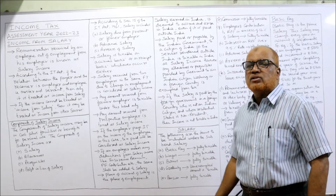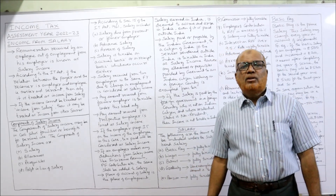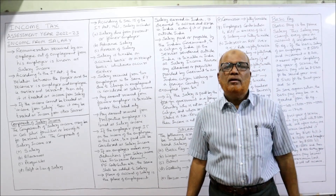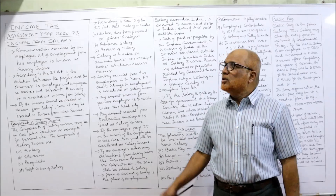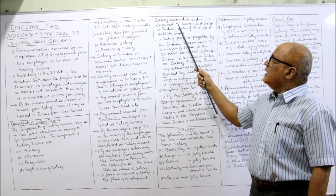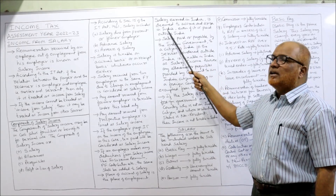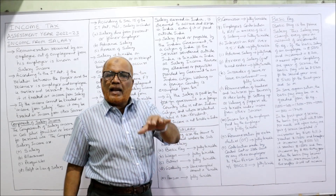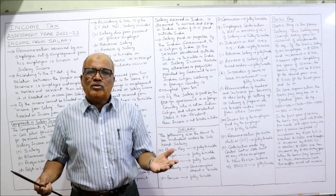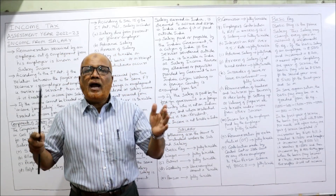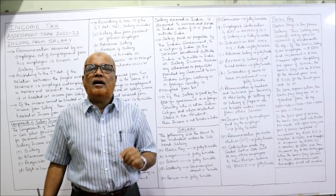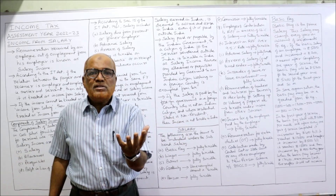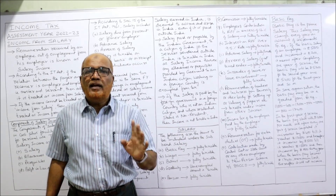Place of accrual of salary is the place of employment. Salary earned in India is deemed to accrue and arise in India, even if it is paid outside India. So if an employee has earned salary in India, it is deemed to accrue and arise in India — whether it is paid in India or outside India is immaterial. Because it is accrued in India, it is an Indian income.